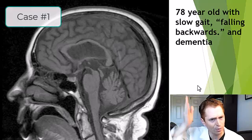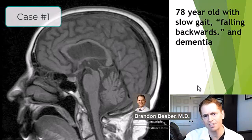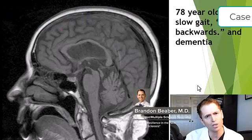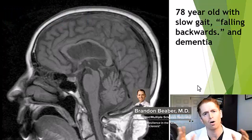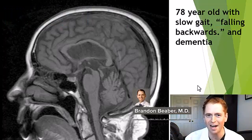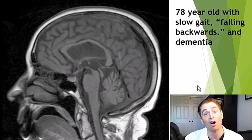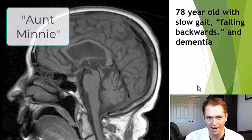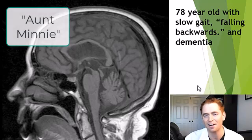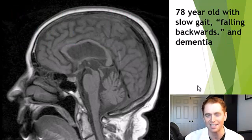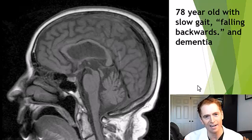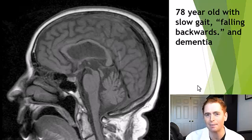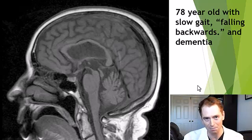This is a sagittal image of an MRI — we're looking at slices of a 78-year-old who is having difficulty walking, falling backwards, and also has dementia. Do you know the diagnosis? This is an example of an 'aunt mini,' a distinctive radiologic finding that makes the diagnosis immediately obvious. Can you pass this neuroradiology aunt mini quiz? I'm going to give the answers in the second half of the video. Feel free to pause at any time to look at the images — we're going to go rapid fire — and let me know how you did in the comments below.